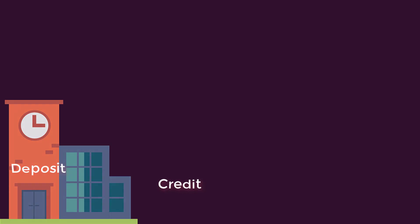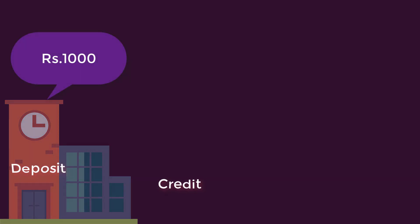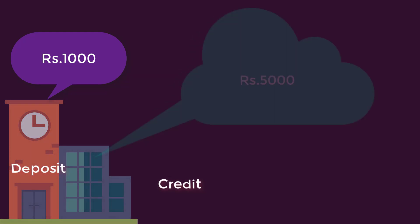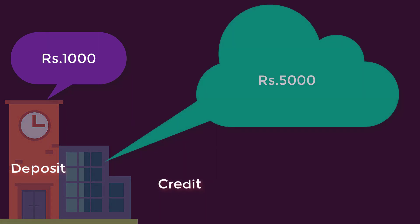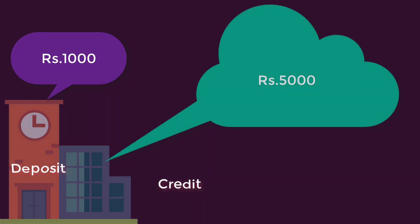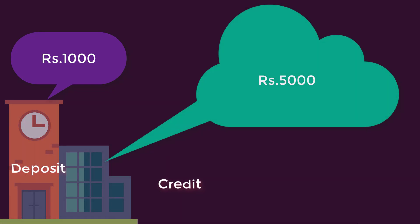For example, if a bank receives a deposit of 1000 rupees, it will increase the money supply to 5000 rupees. How? Banks manage to lend more than 1000 rupees. Whenever a bank lends, it creates a new deposit. The new deposit is money.